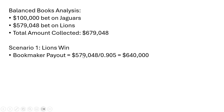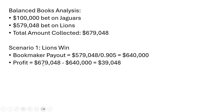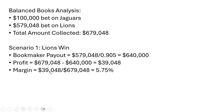How do I get that? I take the amount bet on the Lions divided by the implied probability of the Lions winning. The bookmaker's profit then is the total amount collected by the bookmaker — $679,048 — minus the payout to the winners, those that bet on the Lions. We have a profit here of $39,048. In terms of the margin, take this $39,048 and divide it by the total amount of bets that the bookmaker collected, and you get the margin of 5.75%.